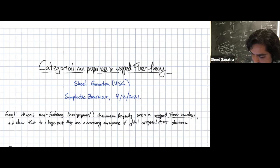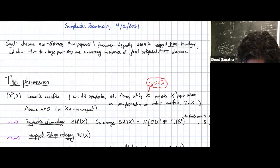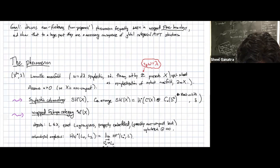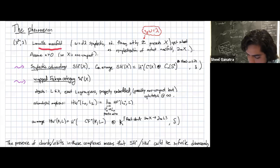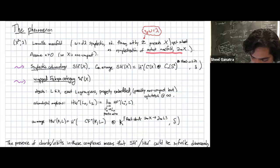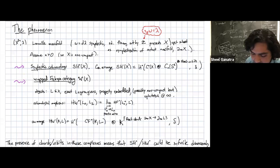To set the stage, I want to remind you what sorts of invariants I'm dealing with — wrapped Floer theory. I'm working with exact symplectic manifolds, specifically Liouville manifolds. These are manifolds modeled on the symplectization of a contact manifold near infinity. I'm assuming positive dimension, so Liouville manifolds are actually non-compact — that's important. Wrapped Floer theory associates a closed string and an open string invariant.